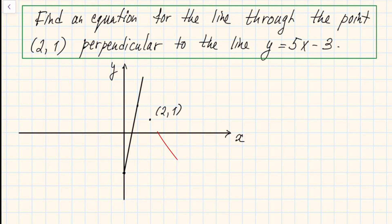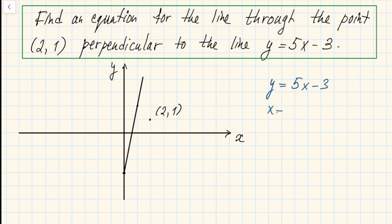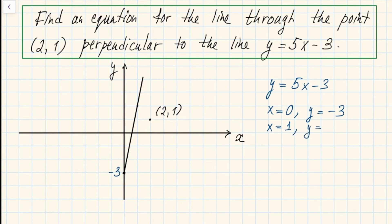I already graphed the point (2, 1) and the line y equals 5x minus 3. I graphed it by choosing the y-intercept — when x equals zero, y equals negative three — so that's the point on the y-axis. Then I chose x equals one, giving y equals five minus three, which is two. I drew the line through (0, -3) and (1, 2). The question is to find a line perpendicular to this one, passing through the point (2, 1).